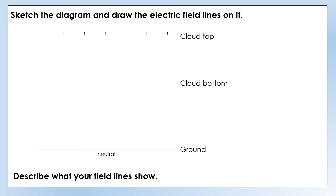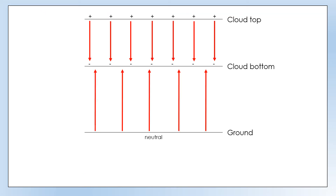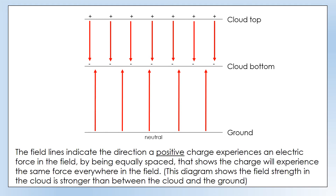Now let's look at what we should have. The field lines inside the cloud should be closer together than the field lines between the cloud and the ground, because the electric field is stronger inside the cloud — that's why we get far more lightning occurring between clouds and inside clouds than with the ground. The field lines indicate the direction a positive charge experiences an electric force. A positive charge placed here would be repelled by the positive charge and attracted by the negative. The equally spaced lines tell us a charge placed anywhere in that field would experience the same force.